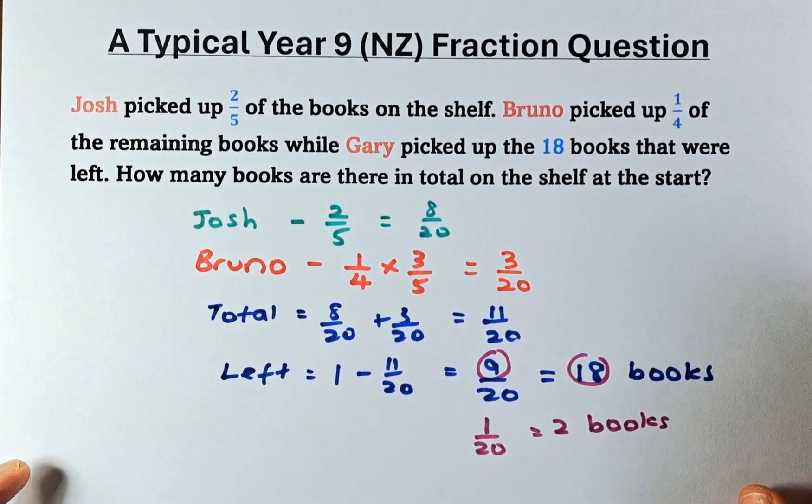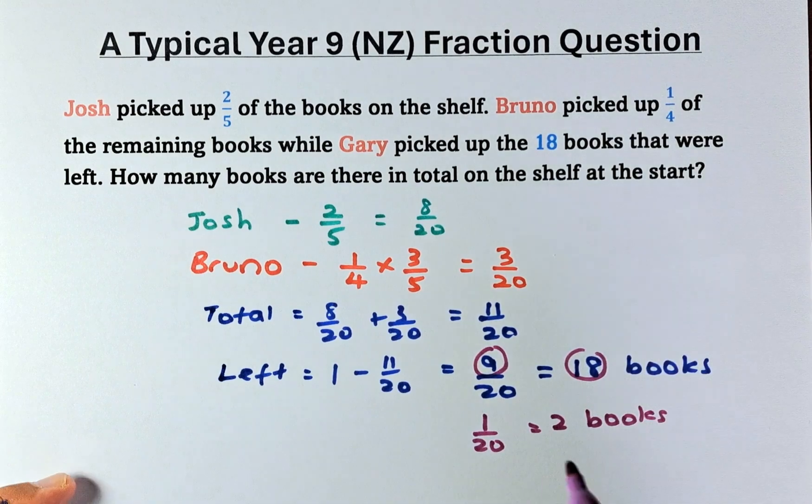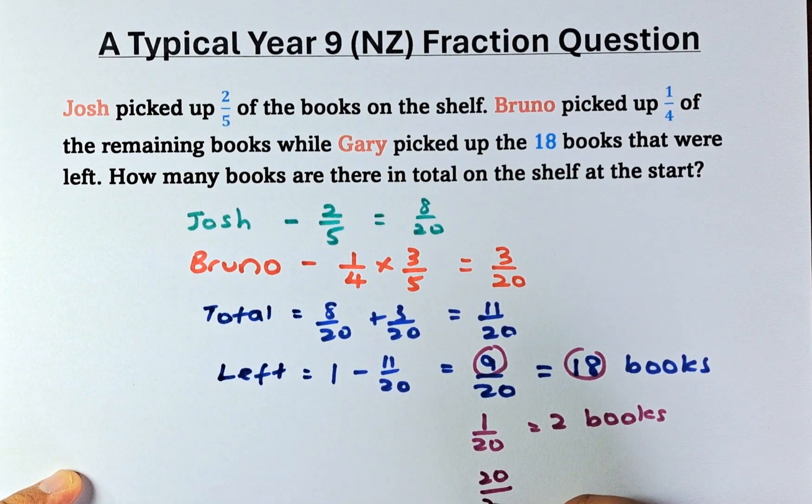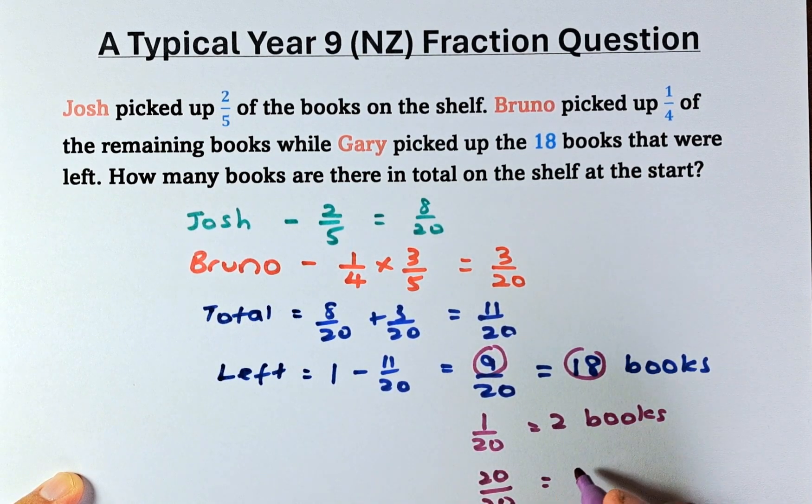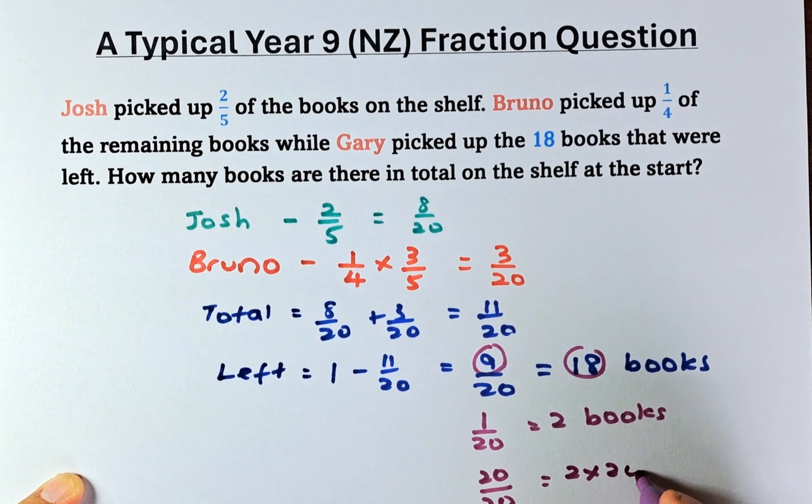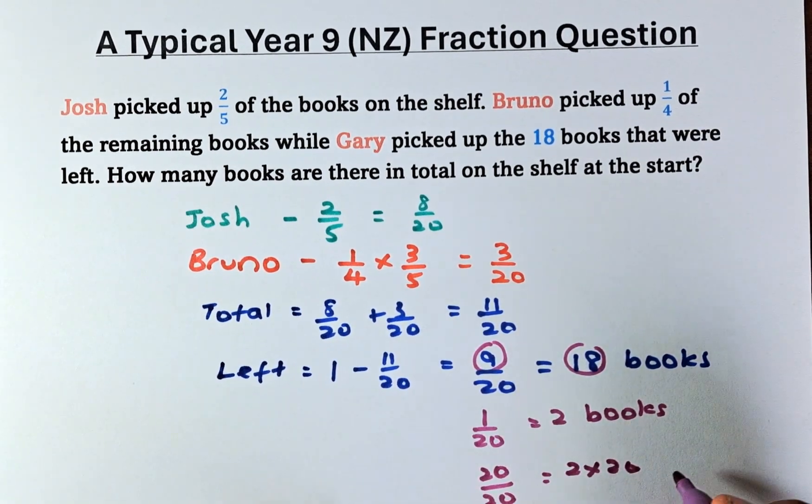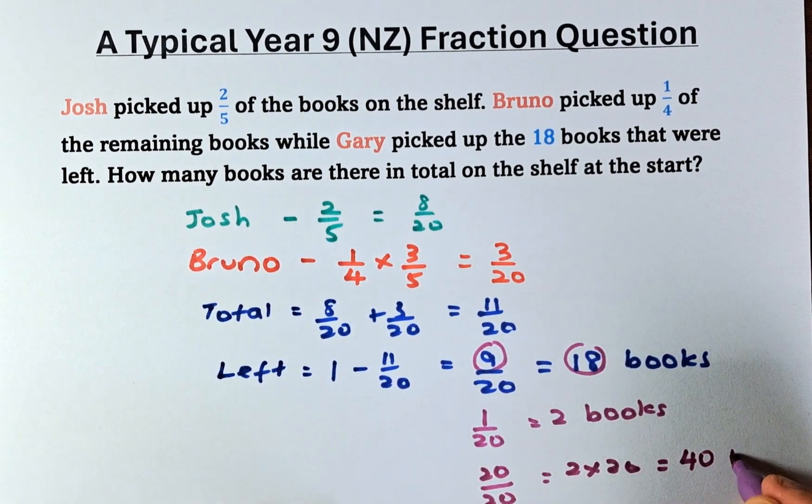But we are interested in the original number of books. The original is a full whole. It's going to be twenty over twenty. If one over twenty is two books, twenty over twenty, you just take two multiplied by twenty. And the answer is going to be forty books.